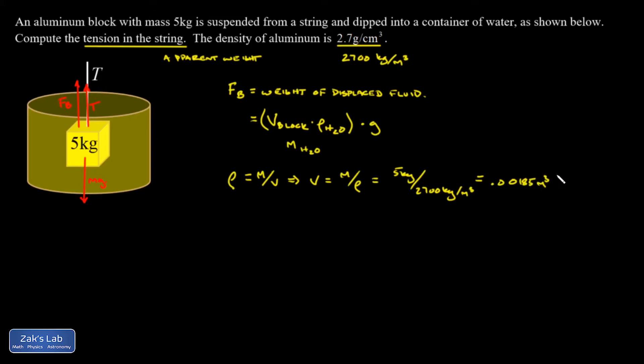So now I can get the buoyant force: it's the volume of the block times density of water times g, and I get 18.15 newtons for that. And then I wrap things up by getting into the force analysis.